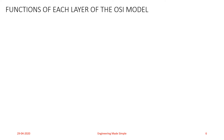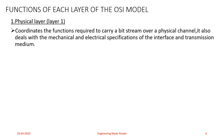We will now study the functions of each layer of the OSI model. The first layer is the Physical layer, which is Layer 1. The Physical layer coordinates the functions required to carry a bit stream over a physical channel.